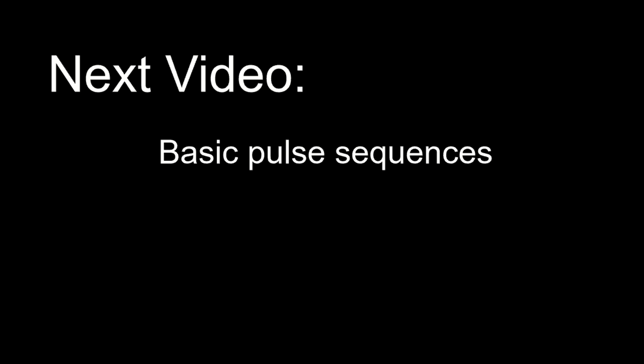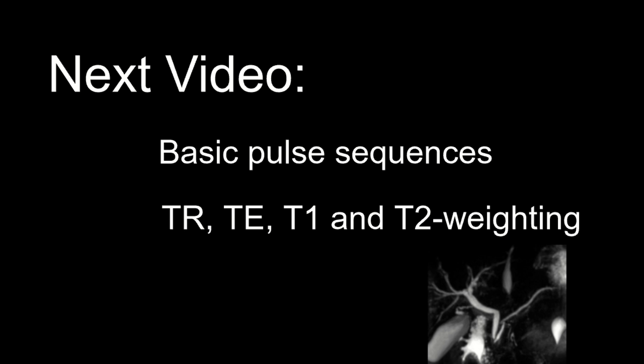In the next video, we'll cover some basic pulse sequences like gradient and spin echo. We'll introduce the parameters of TR and TE and how they can be manipulated to make T1 weighted and T2 weighted images. We'll illustrate these concepts using MRCP images as an example.